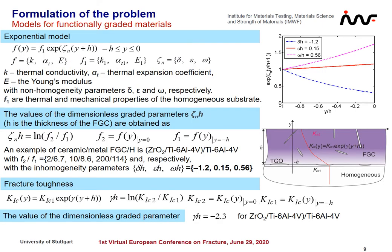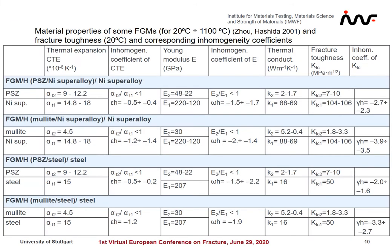Models for functionally graded materials: we will use exponential models. Non-homogeneity parameters of these models are introduced for thermal and mechanical properties, and exponential models will also be used for fracture toughness. The additional non-homogeneity parameter for fracture toughness is gamma. Some results for the calculated non-homogeneity parameters are shown on this slide. Material properties for functionally graded materials and corresponding inhomogeneity coefficients are presented in this table, and these parameters will be used in the parametric analysis.